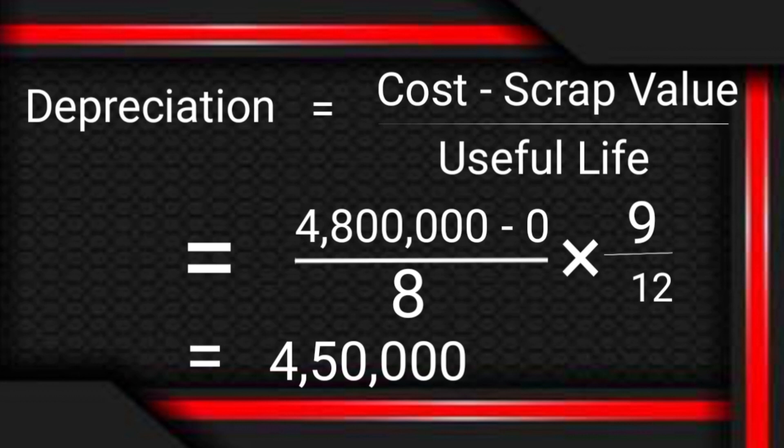But in the question, the asset was acquired on 1st April. From April to December: April, May, June, July, August, September, October, November, and December — these are 9 months. So we multiply by 9 over 12 to get 9 months of depreciation.